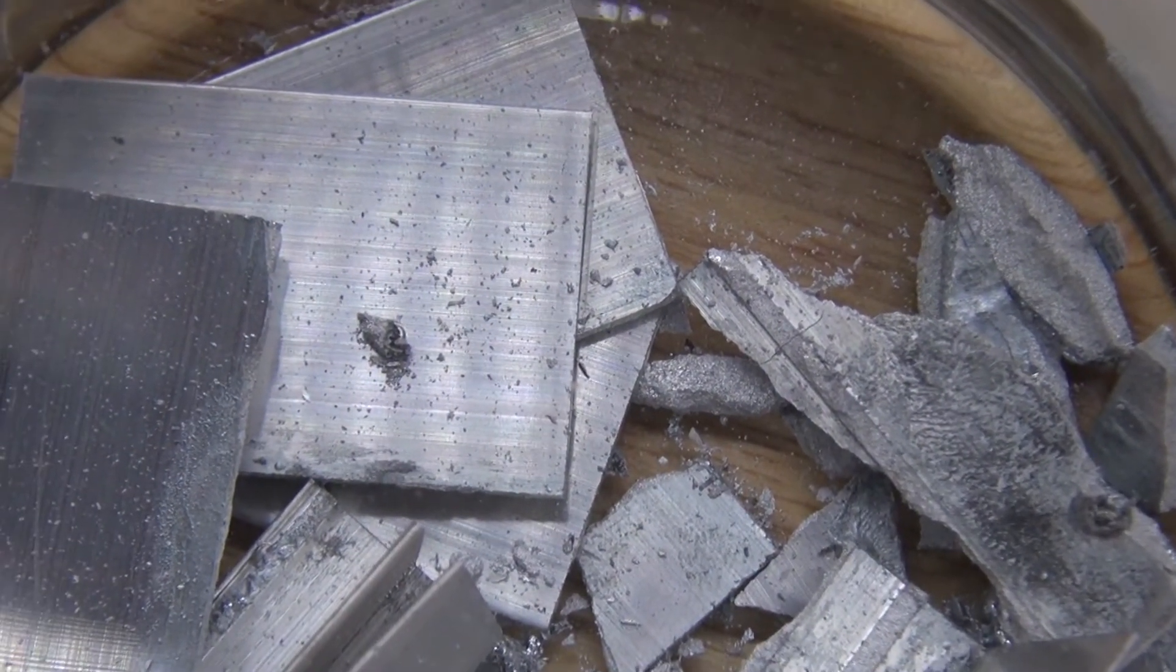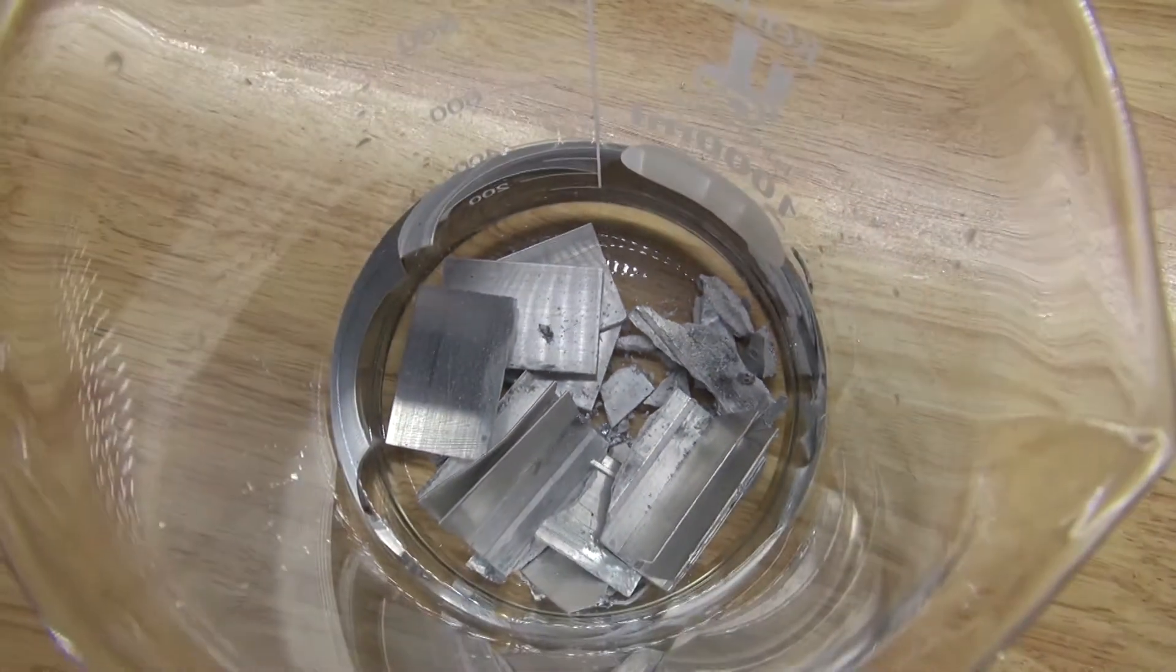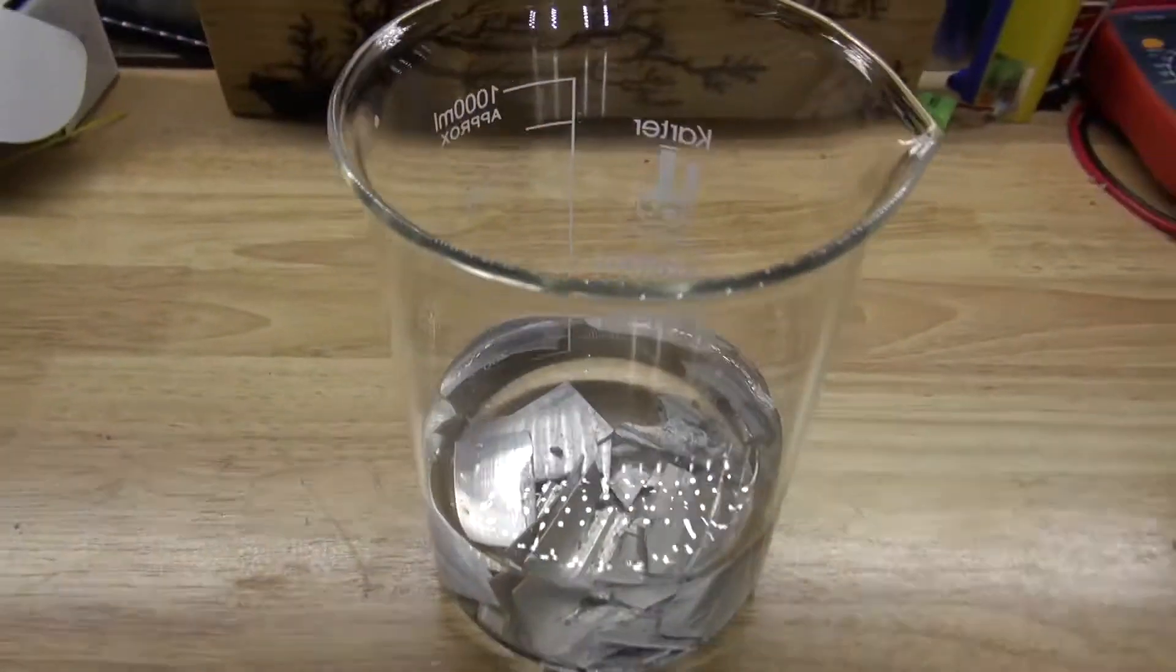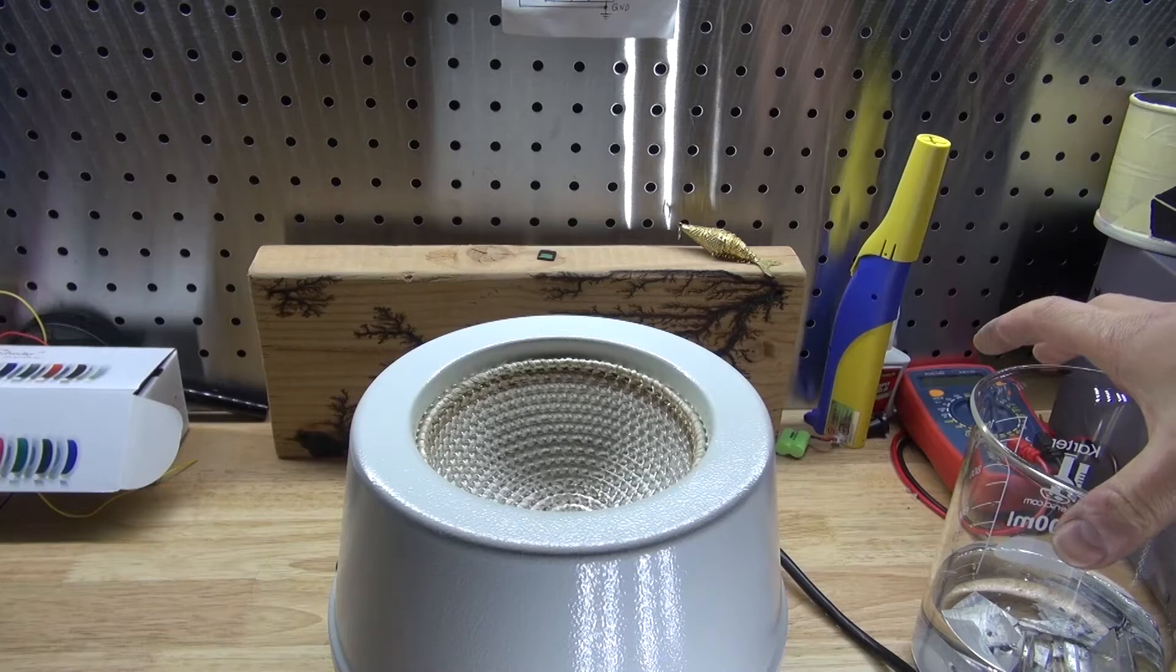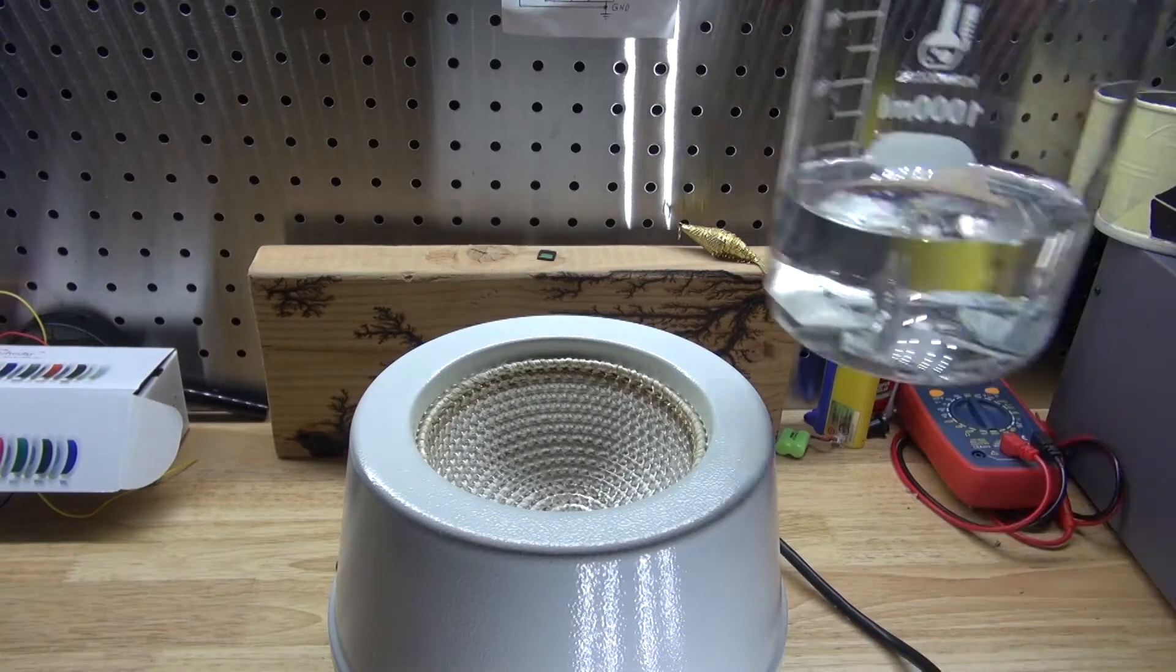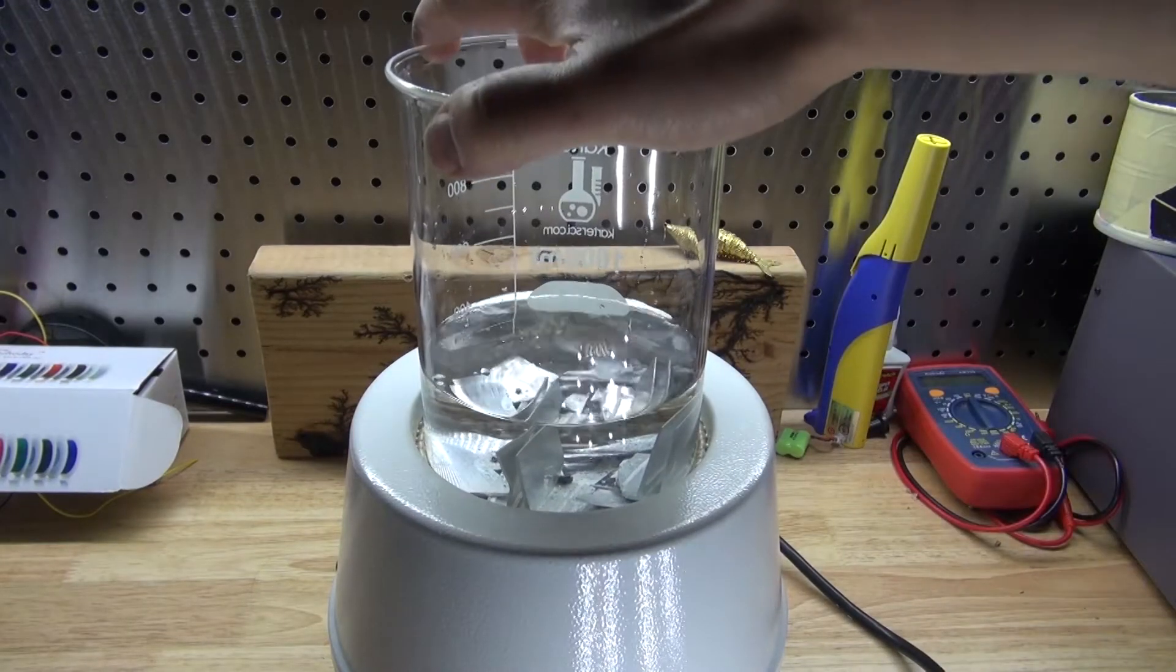But that reaction, by just leaving it at room temperature, is a little bit too slow, and especially since my room is too cold. So what I'm going to do is take the beaker and put it inside of this heating mantle to speed up the reaction even more.